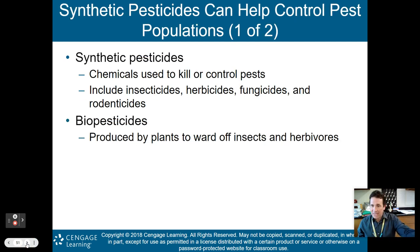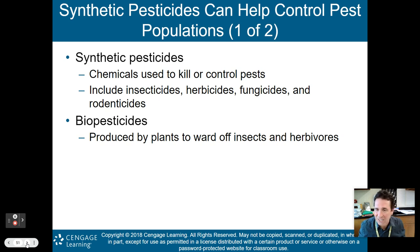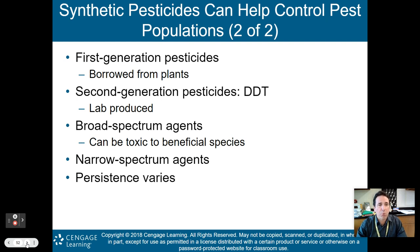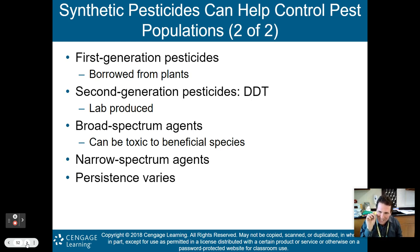Synthetic pesticides are chemicals used to kill or control pests. They include insecticides, herbicides, fungicides, and rodenticides. Biopesticides are produced by plants themselves to ward off insects and herbivores. The first generation of pesticides was basically borrowed from plants. The second generation, which includes DDT, was lab-produced. There are broad-spectrum pesticides, which are toxic to beneficial species — they kill everything. So if you're spraying to kill a specific fly, you're also killing bees. There are also narrow-spectrum agents that target just one organism, which would be better. Persistence of these chemicals also varies.